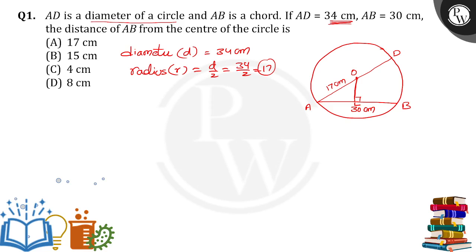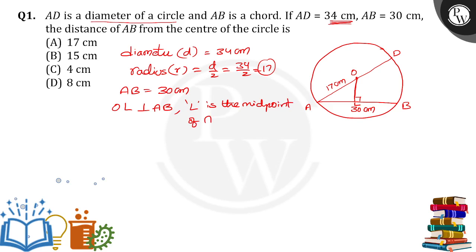Taking the chord, the chord AB is equal to 30 cm. OL is drawn perpendicular to AB such that L is the midpoint of AB, because whatever perpendicular we draw to a chord, it will bisect the chord. So AL is equal to 30 divided by 2, we get 15 cm.